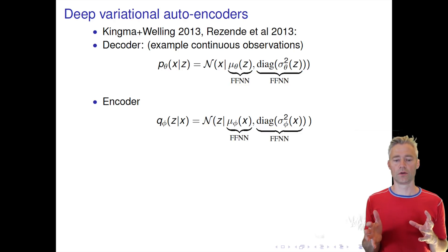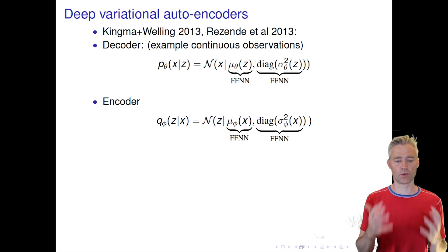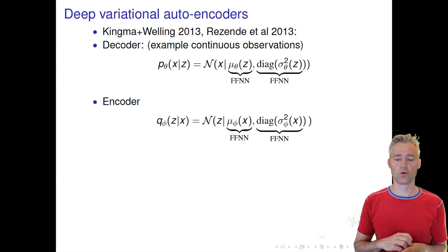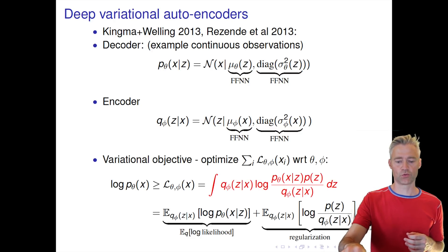You can see that our decoder has parameters θ and our encoder has parameters φ, and these are two different neural networks. There's no parameter sharing between the two.